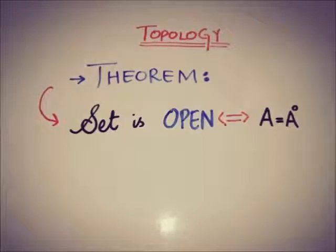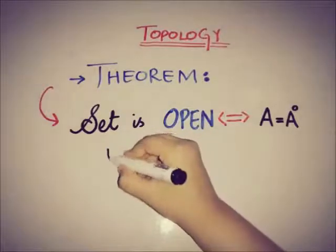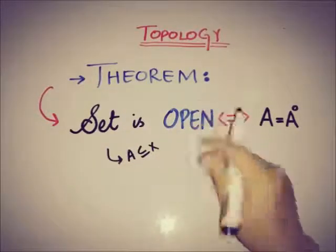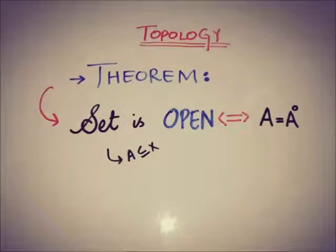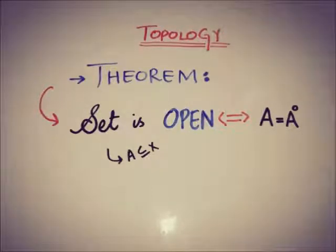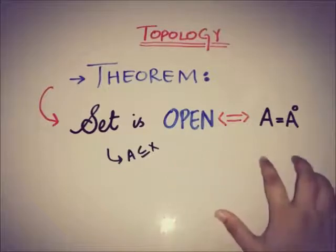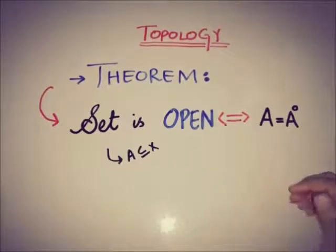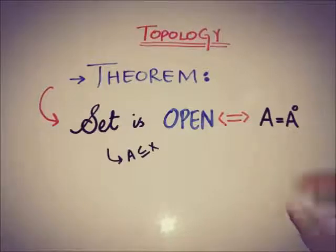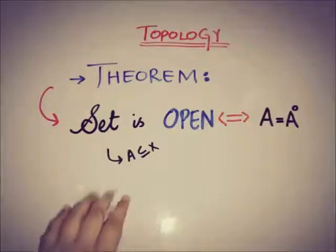The theorem states that a set A, considered as a subset of X, is said to be open if and only if that set is equal to the interior of that set. This is an if-and-only-if condition: if a set is open then it equals its interior, and if a set equals its interior then the set is open.